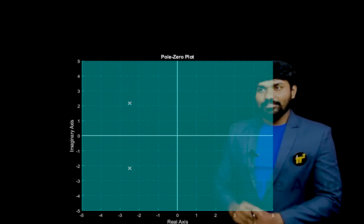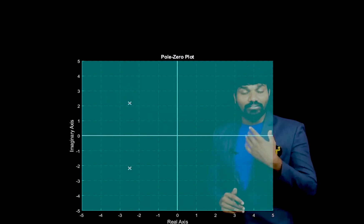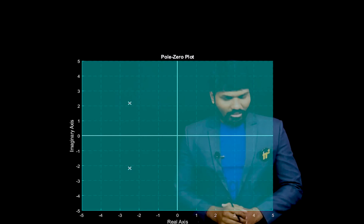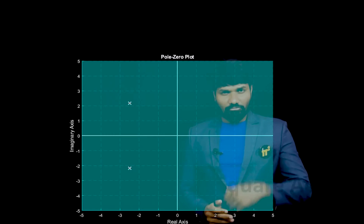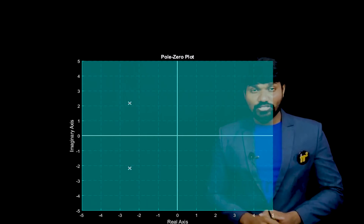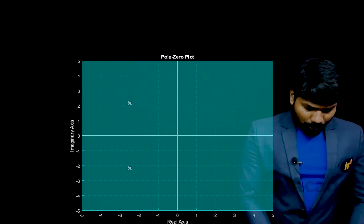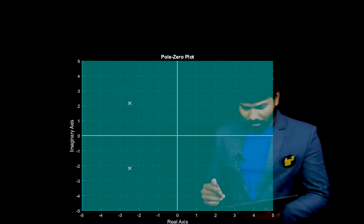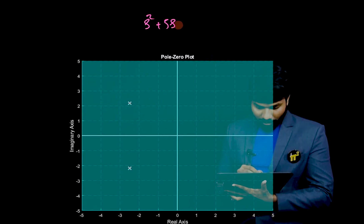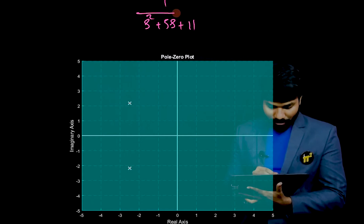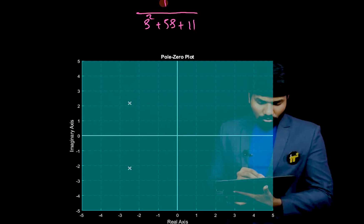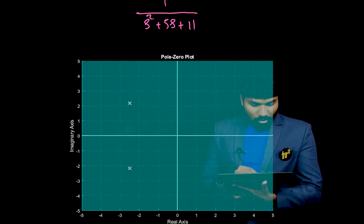To explain that, we developed a simple tool. We have been developing different applications so that control systems becomes easier. You can check the trial course for control systems GATE courses via the link in the description. This is a pole-zero plot of a typical transfer function: 1 divided by (s² + 5s + 11). As there are no zeros, only the poles are represented here.